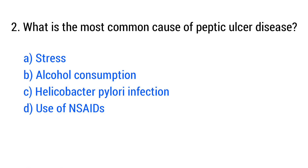Question number 2. What is the most common cause of peptic ulcer disease? The right answer is option C: Helicobacter pylori infection.